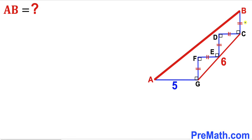I am going to label each of these equal segments as lowercase a — this segment lowercase a, this segment lowercase a, and lowercase a across the board. Now let's make an observation: we know that the whole segment CG is 6 units.